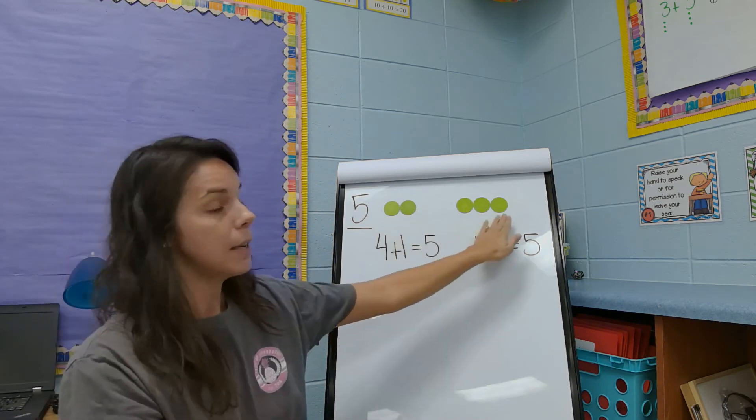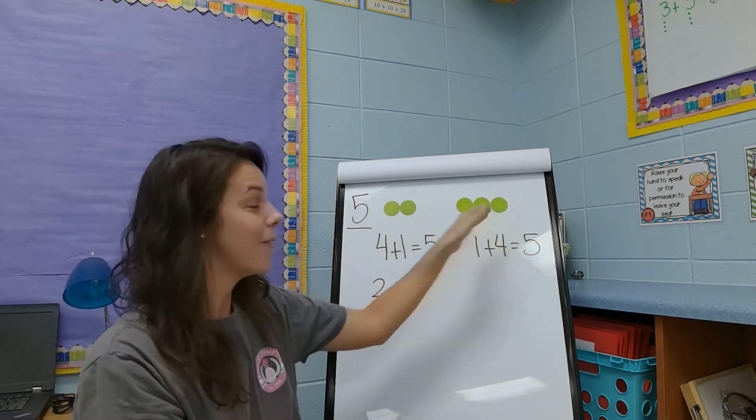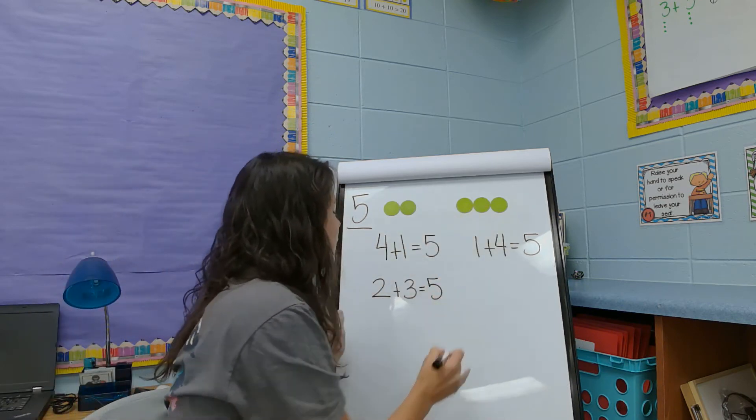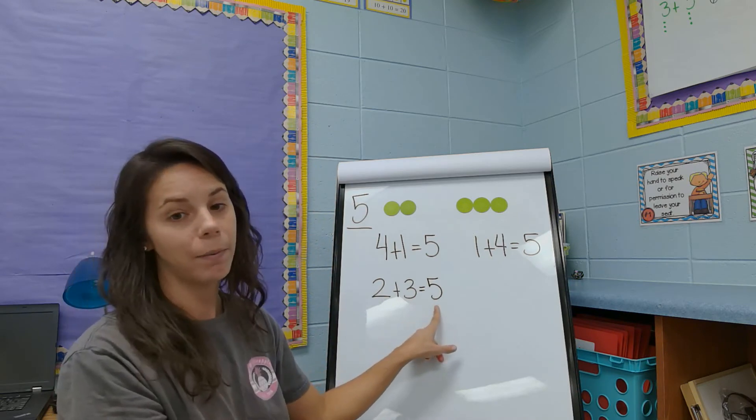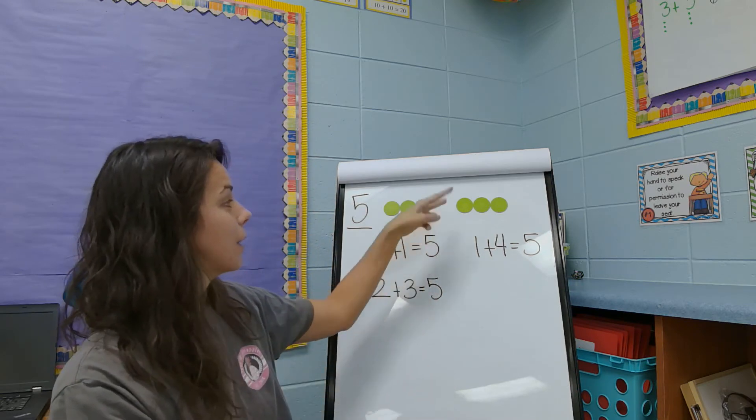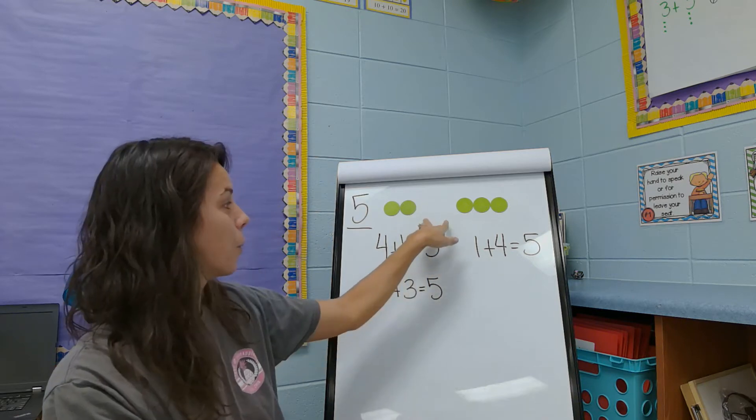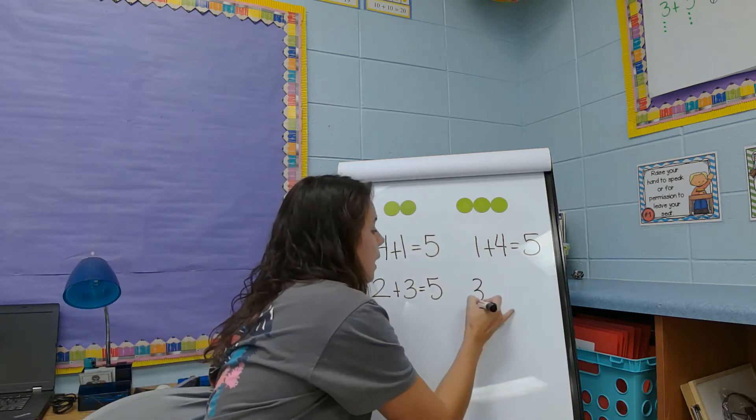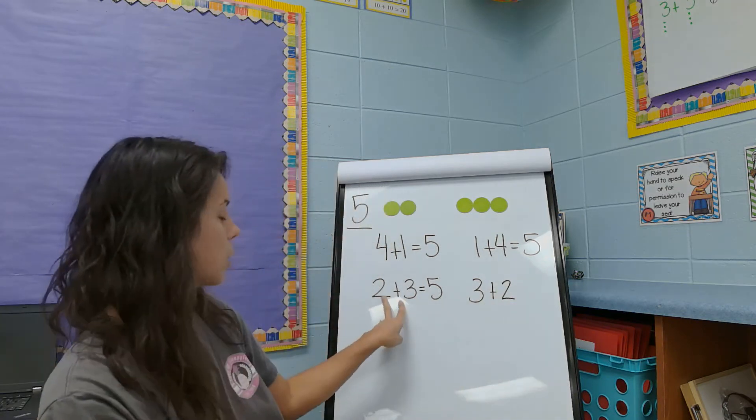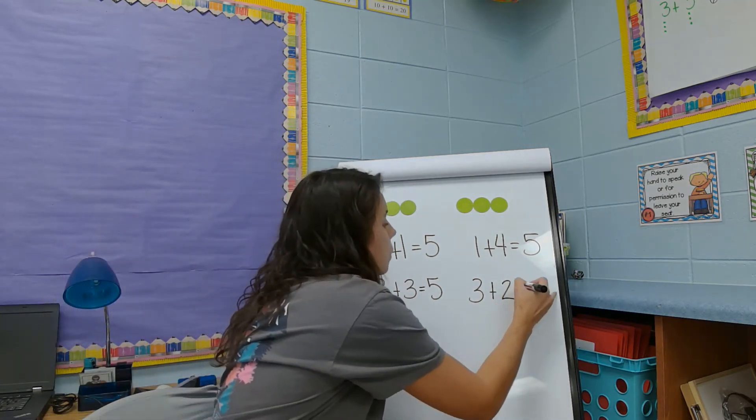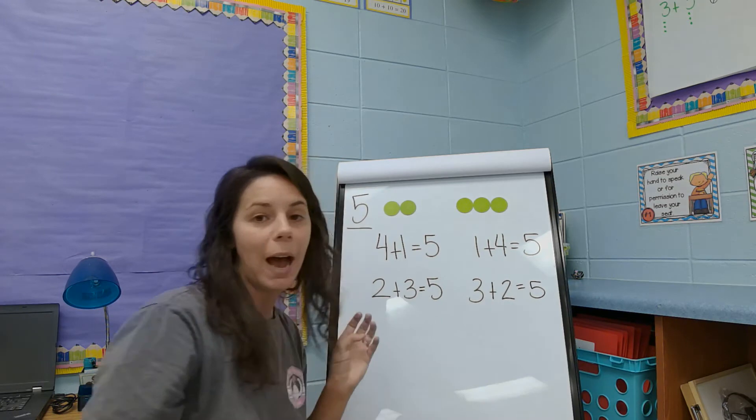And we still have five. So two plus three equals five. Even if I was to swap those dots again, we would still have the same group of five. So I'm going to write three plus two. We just switched our numbers and it will still equal five.